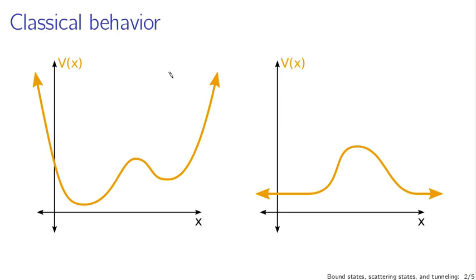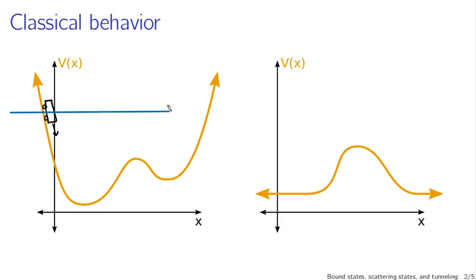First, let's consider what happens classically. If we have a potential V(x), imagine a little cart rolling around on some sloped surface — this would be gravitational potential. A cart in a given position is going to accelerate downhill and roll back up until it reaches the height at which it started, the same potential at which it started. If I have some total energy level for our cart and it starts here with zero initial velocity, then at that point its potential energy equals its total energy.